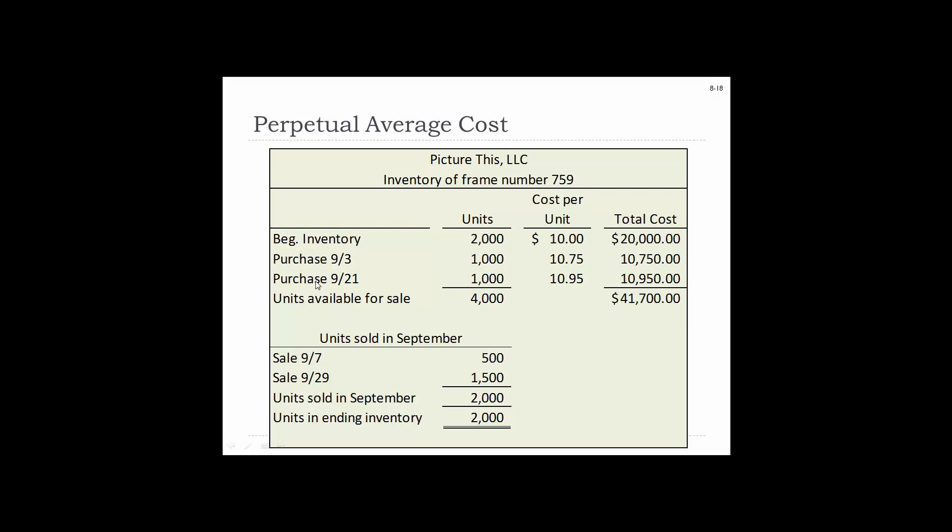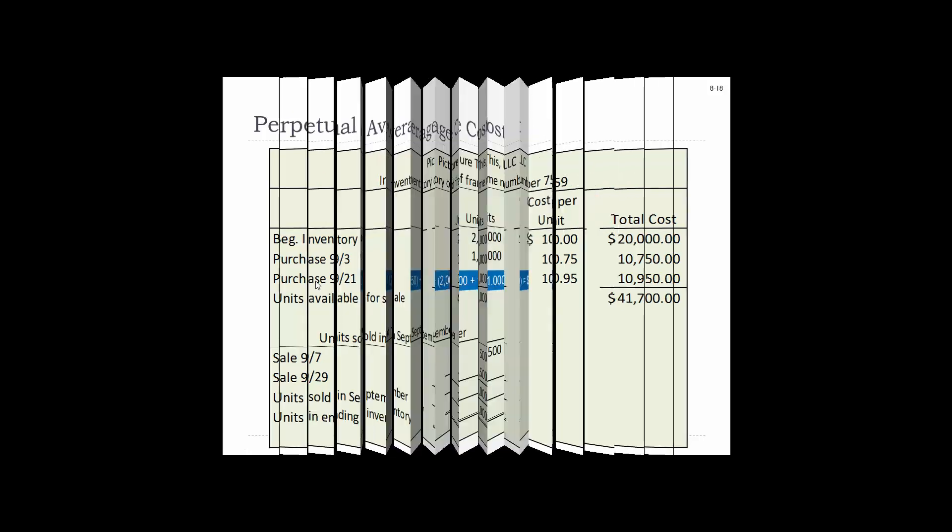Here's the account for units sold in September. On the 7th they sold 500 units. On the 29th they sold 1,500 units, for a total of 2,000 units sold. They had 4,000 available for sale, subtract what they sold, and they have ending inventory of 2,000 units.